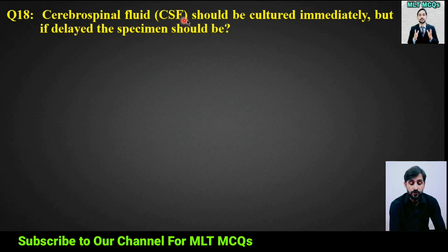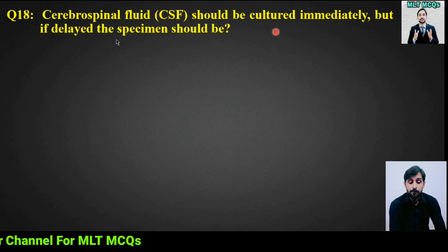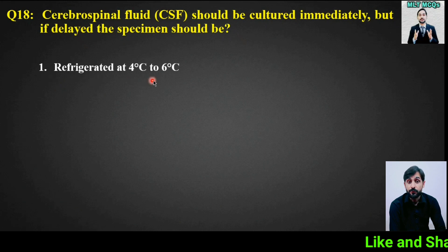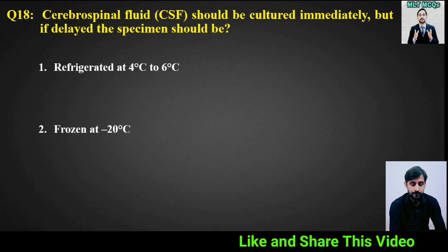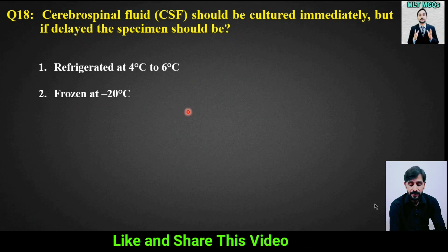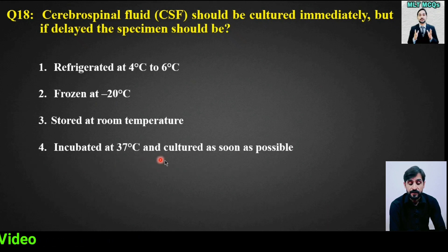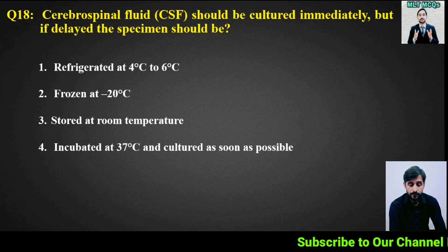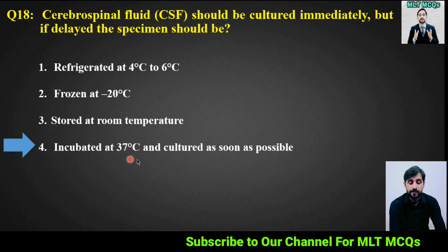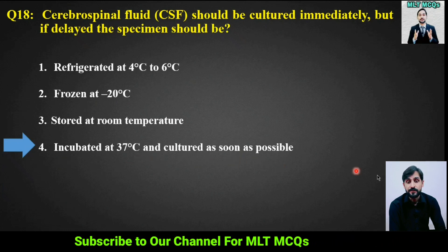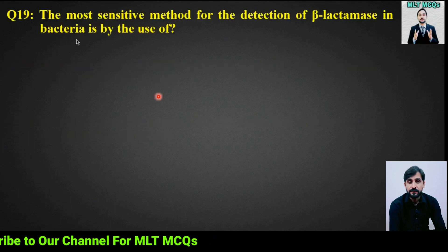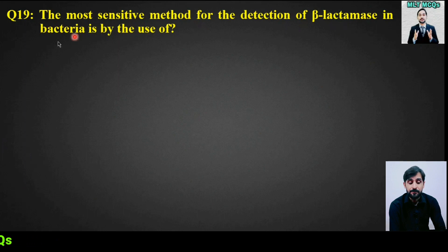MCQ number 18: Cerebrospinal fluid (CSF) should be cultured immediately, but if delayed the specimen should be — options: (1) refrigerated at 4–6°C, (2) frozen at minus 20°C, (3) stored at room temperature, (4) incubated at 37°C and cultured as soon as possible. The right answer is option 4: incubated at 37°C and cultured as soon as possible.